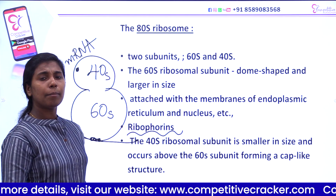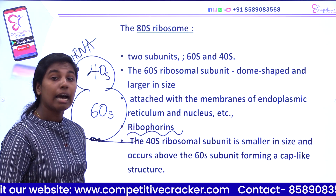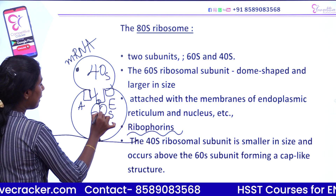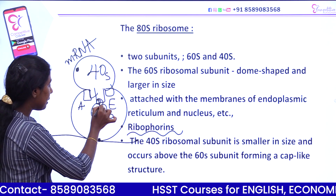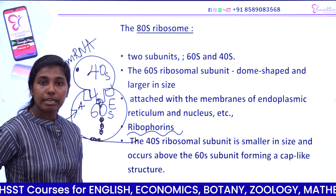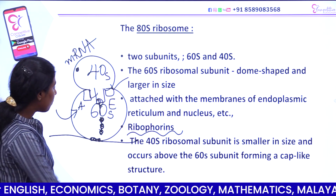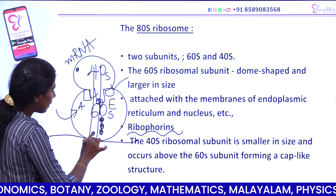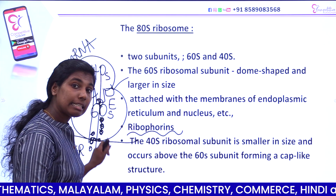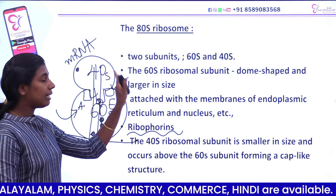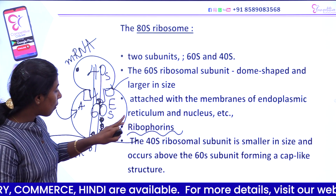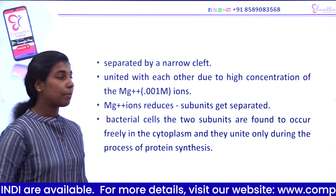In protein synthesis, the ribosome has three sites on the larger subunit known as the A, P, and E sites. The A site is where tRNA binds (aminoacyl site). The P site is the peptidyl site where peptide bond formation occurs. The E site is the exit site where tRNA exits. The mRNA binding occurs at the smaller subunit, and the A/P/E sites are on the larger subunit. The larger subunit attaches to the membrane with the help of proteins called riboforins. Both subunits are separated by a narrow cleft.